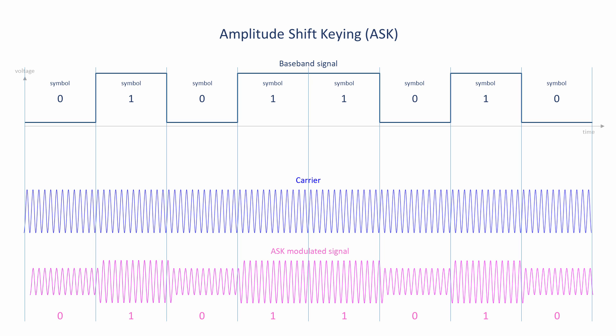One after another, each waveform is converted into radio energy by the antenna and propagated through space. At the receiving end, the incoming signal is sampled at the symbol rate, and the amplitude of each sample is used to determine whether it represents a 1 or a 0.